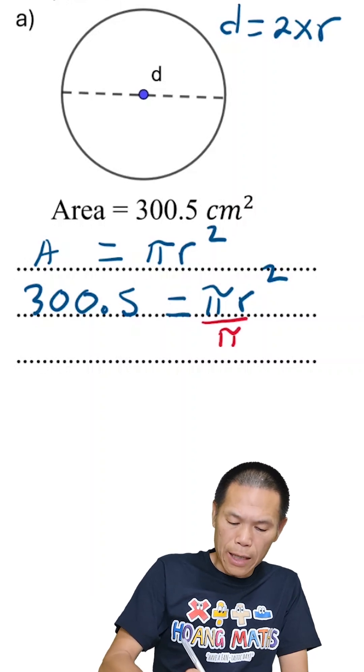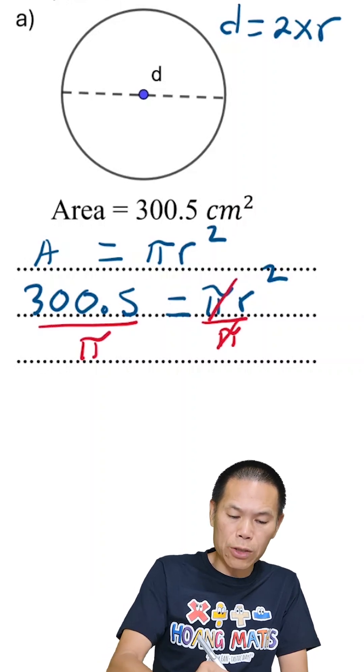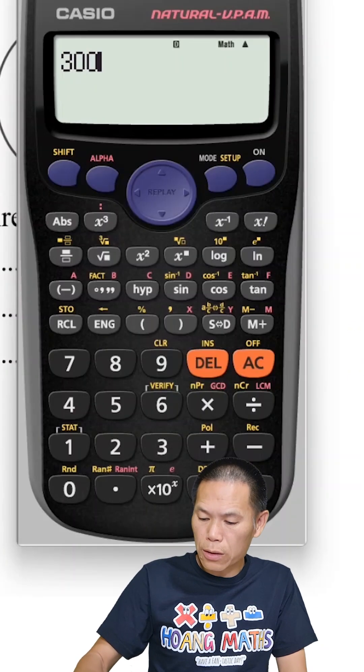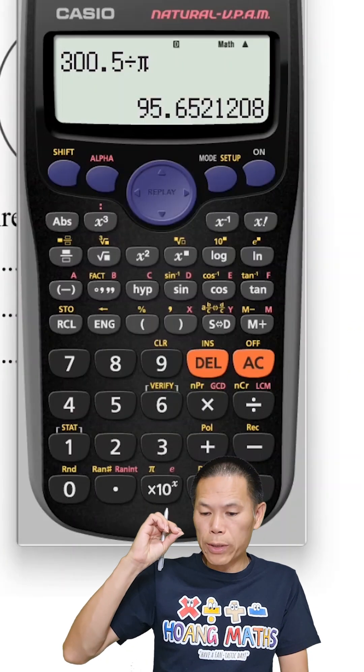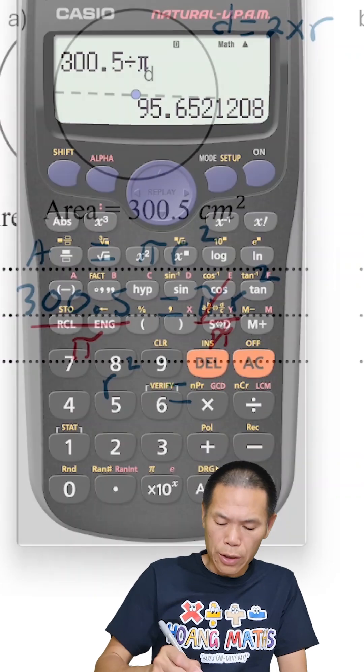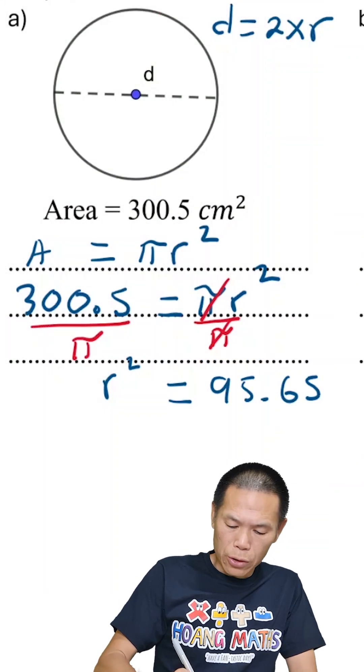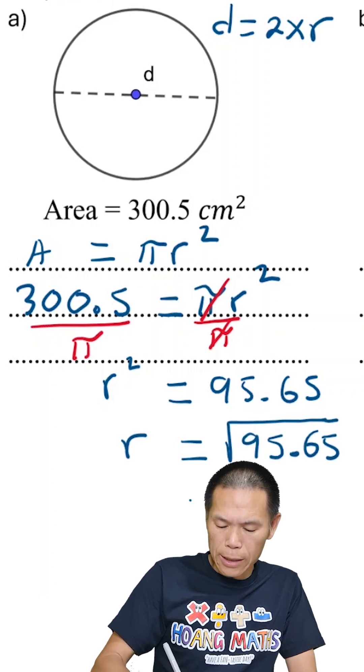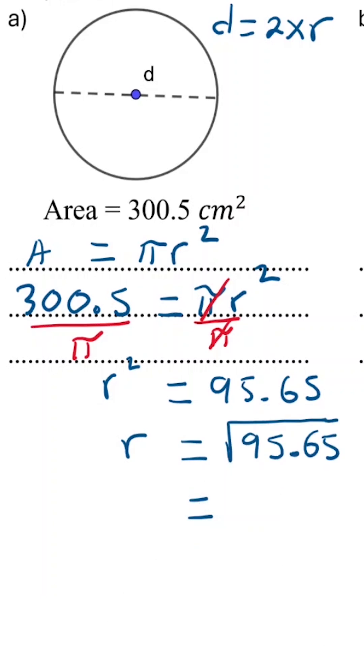So area: I divide this by π, and I divide this by π, but they cancel out. So r² is 300.5 divided by π, which equals 95.65 and so on. So that means the radius is equal to the square root of 95.65, which is 9.78.